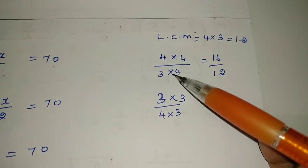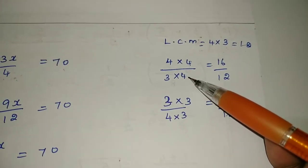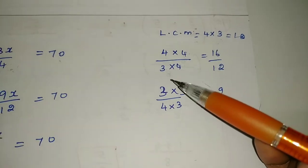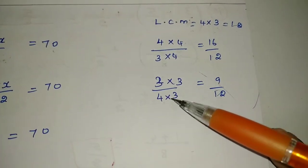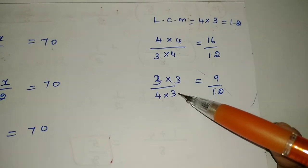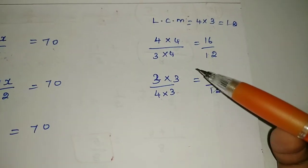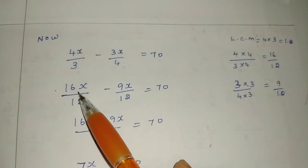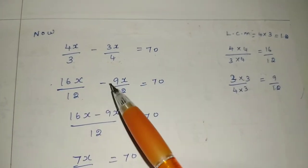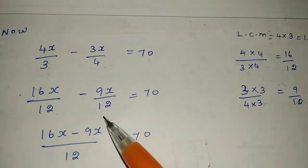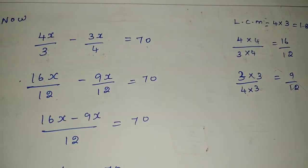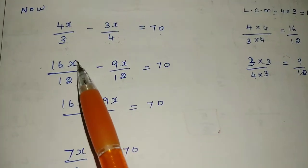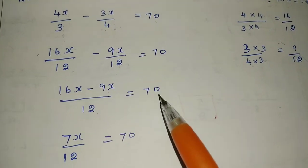For 4/3: the denominator is 3, and multiplying by 4 gives 12, so numerator 4 × 4 = 16, giving 16x/12. For 3/4: the denominator is 4, multiplying by 3 gives 12, so numerator 3 × 3 = 9, giving 9x/12. So the equation is 16x/12 minus 9x/12 equals 70. Both denominators are equal, so we write 16x − 9x = 70 over 12.